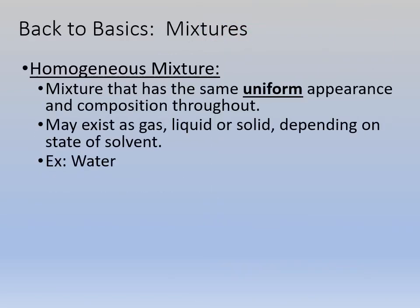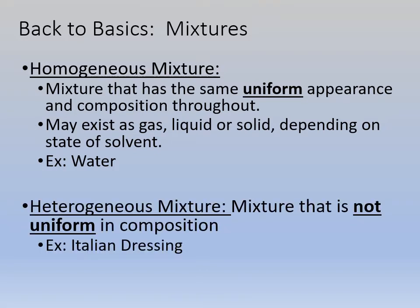Back to what we talked about in the first six weeks: homogeneous mixtures versus heterogeneous mixtures. A homogeneous mixture has the same uniform appearance and composition throughout — it looks the same and is made up of the same thing throughout. It might exist as a gas, liquid, or solid. Example: water. Water is a homogeneous mixture because the water from your sink is not just water — that's why it's a mixture. There are equal parts of fluorine ions and whatever ions are in our tap water throughout.